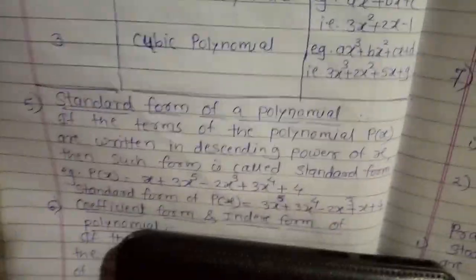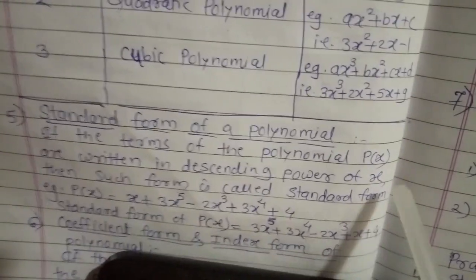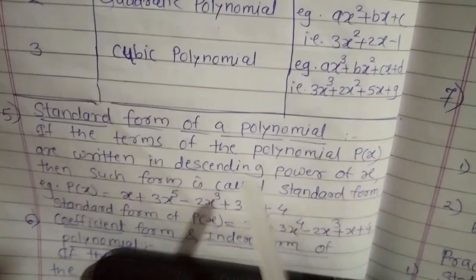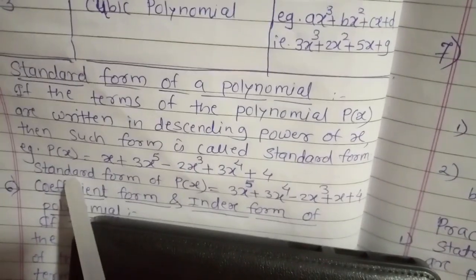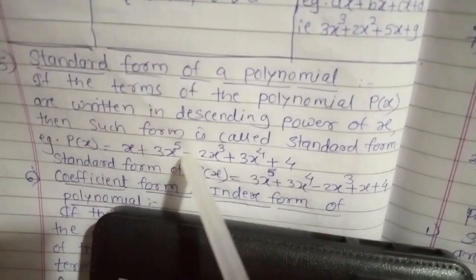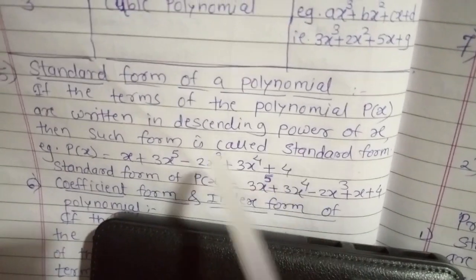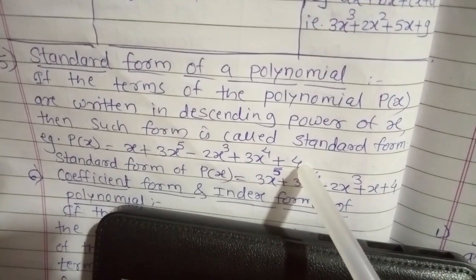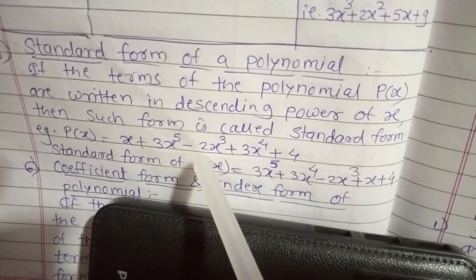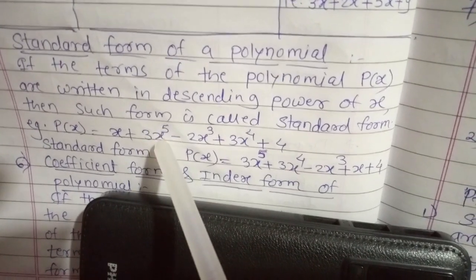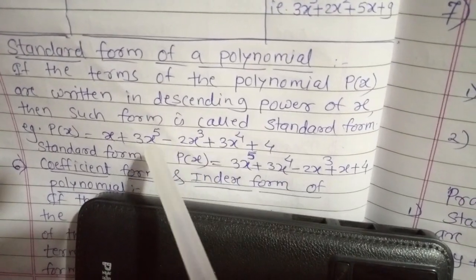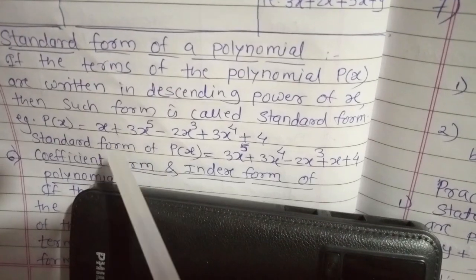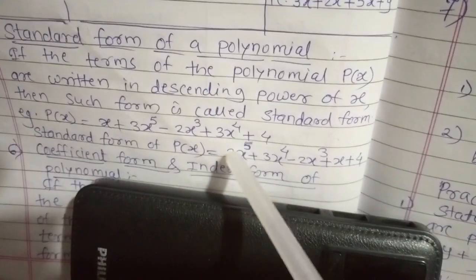After that we need to know the standard form of a polynomial. If the terms of a polynomial p(x) are written in descending power of x, such a form is called the standard form. For example, given p(x) = x + 3x^5 - 2x^3 + 3x^4 + 4, we write it in descending order: 3x^5 + 3x^4 - 2x^3 + x + 4. This is called the standard form.